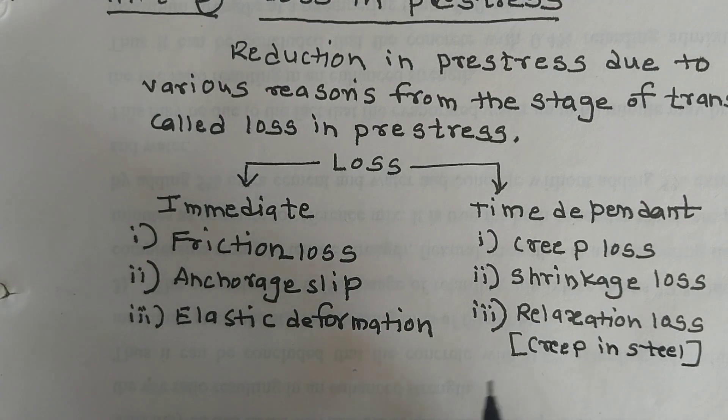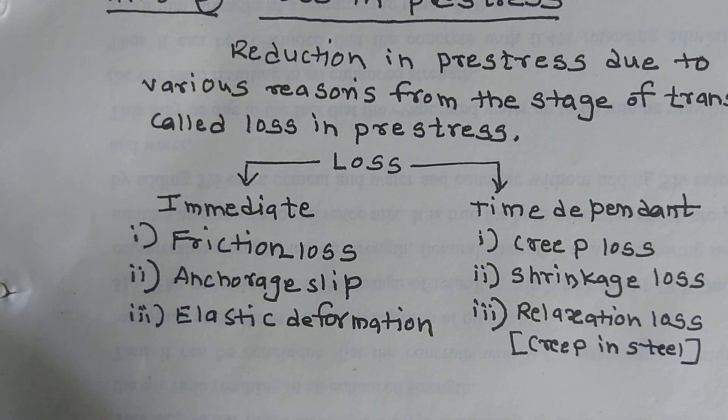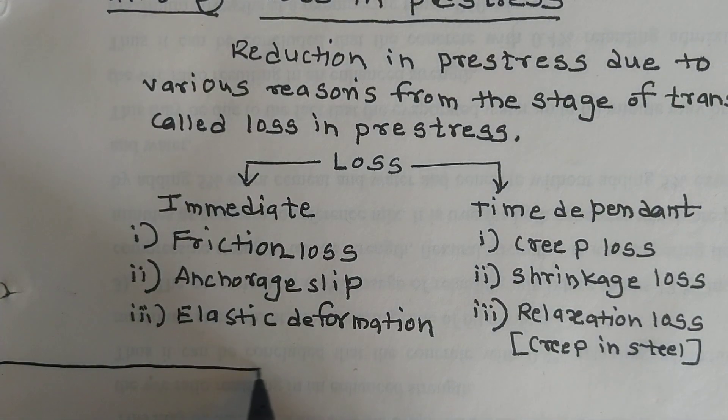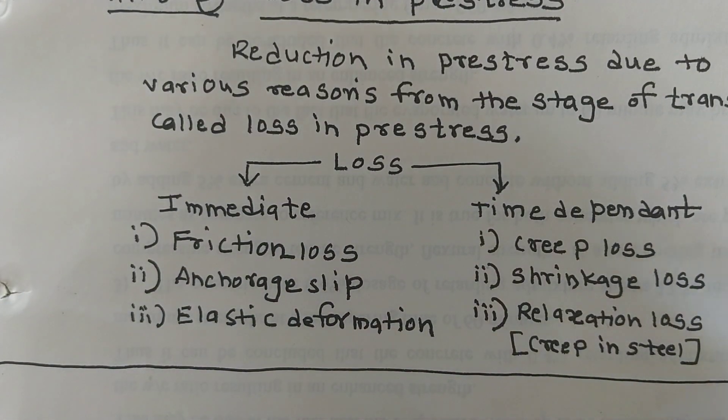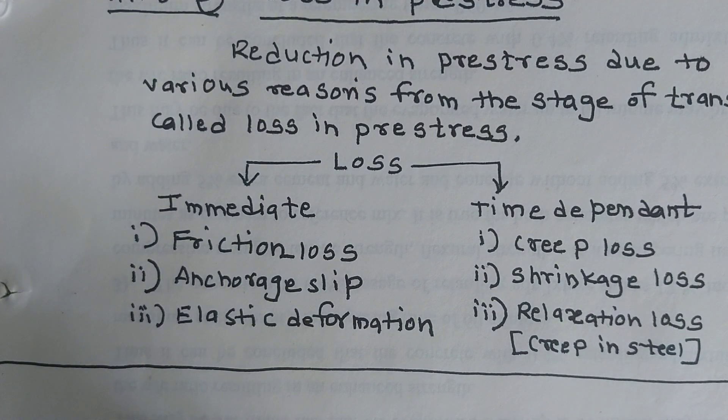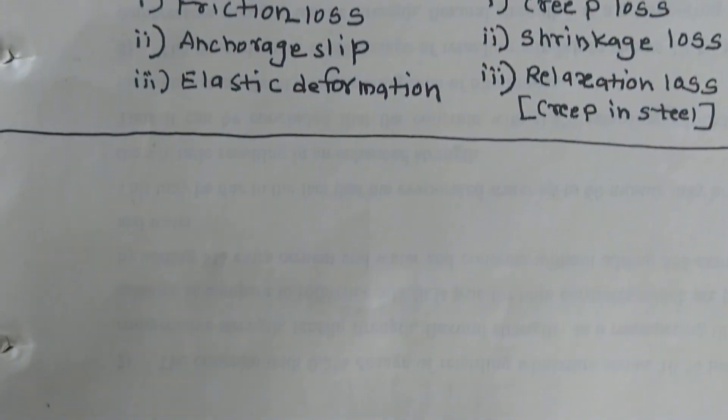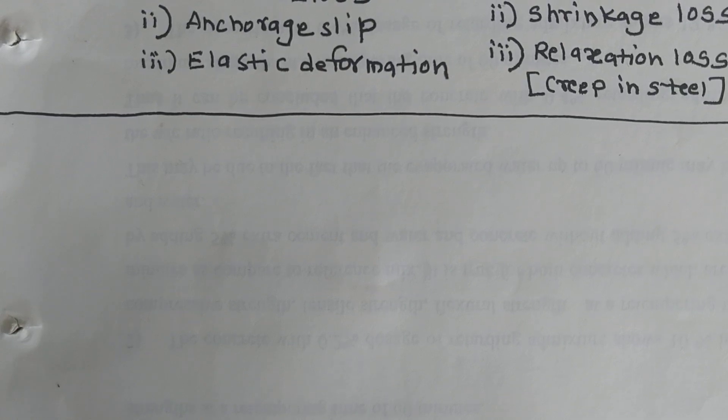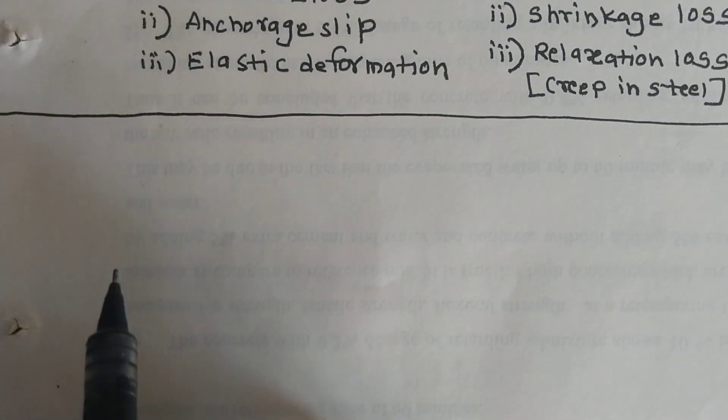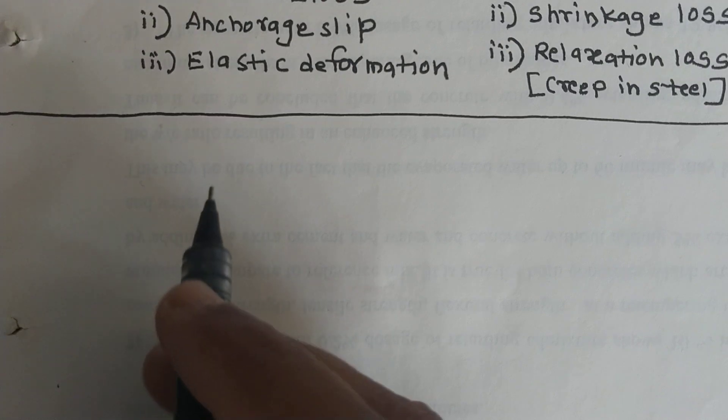So these are some basic theoretical concepts of this unit. Here the conclusion of first part of this unit. Let us move to the next part of this unit. How to calculate these losses considering the pre-tensioning and post-tensioning systems of concrete.